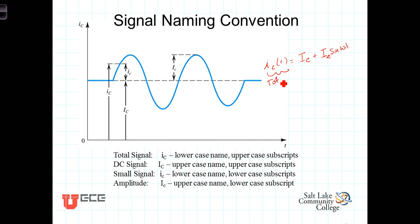So this then is the total response, or the total quantity of this I sub C. This part here is the DC component. This whole thing here is the AC component. And this would be then i sub little c of T.